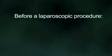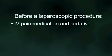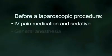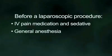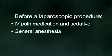Before the procedure, an intravenous line will be started and you may be given a sedative to help you relax. Laparoscopic cholecystectomy is done under general anesthesia, which will put you to sleep for the duration of the operation. This will relax the muscles of the abdominal wall, allowing your surgeon room to work.